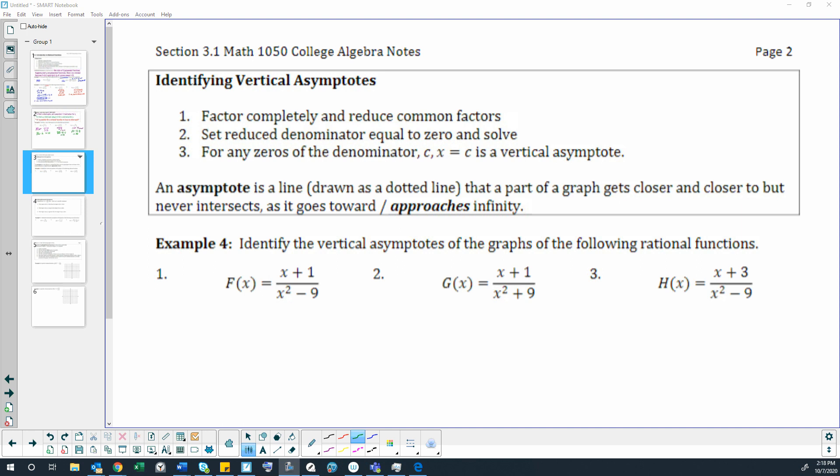The next step to understanding rational functions is to identify vertical asymptotes. To do that, we're going to factor them completely and reduce common factors. We're going to set the reduced denominator equal to zero and solve, and then for any zeros of the denominator c, x equals c is a vertical asymptote.